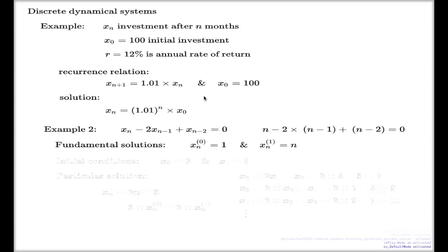Now we can step up the problem a little bit. We can ask: what if I want to find a solution to my difference equation subject to some initial conditions? When I guessed those two fundamental solutions, I didn't think about any initial conditions. In the bank account example we had an initial condition — our initial investment. What if I supply initial conditions like x₀ = 3 and x₁ = 5? What do we do then?